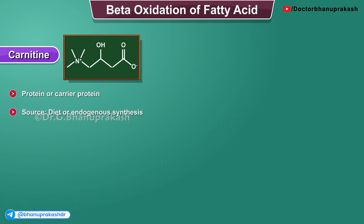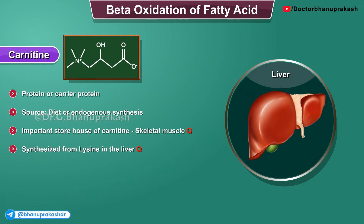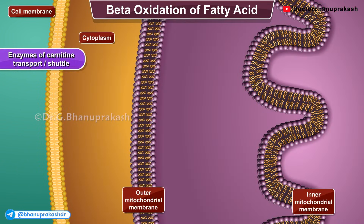The source of carnitine is diet or endogenous synthesis. Skeletal muscle is the important storehouse of carnitine, but it is synthesized from lysine in the liver. S-Adenosyl-Methionine is the methyl donor. Ascorbic acid, that is vitamin C, is needed for its synthesis. There are totally three enzymes present in this shuttle.